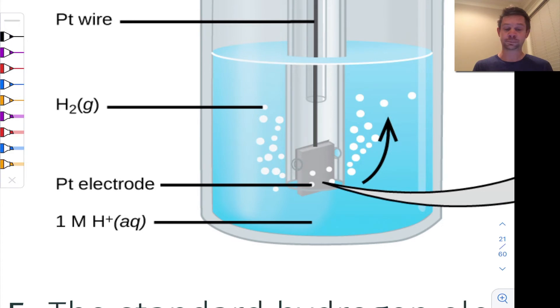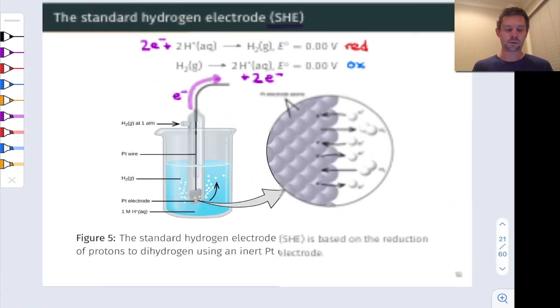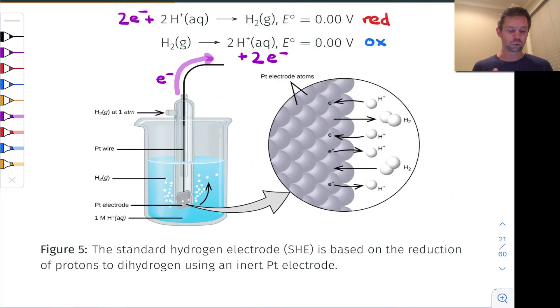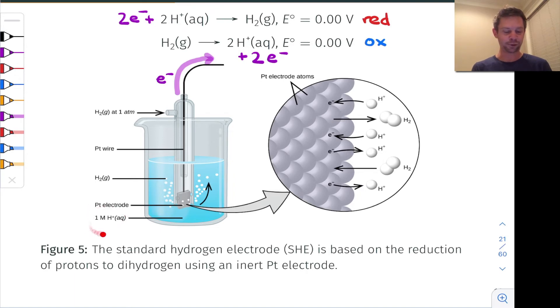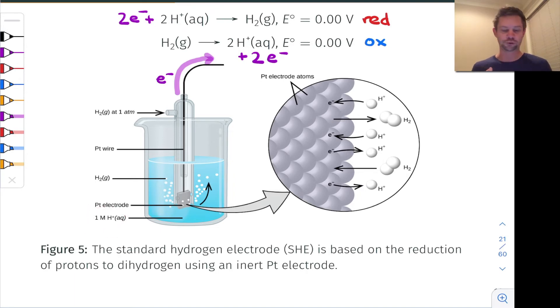Under standard conditions, this H₂ gas has a pressure of one bar or one atmosphere. And the concentration of H⁺ ions is one mole per liter. This is the standard concentration — it ensures that the half cell is at standard state.